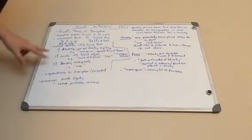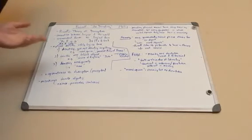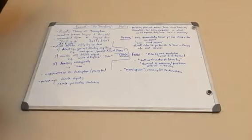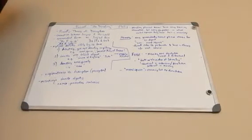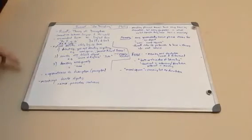The third way of denoting is denoting ambiguously — thus, 'man.' The word 'man' is a lot of things. It can pick out me, it can pick out Winston Churchill, it can pick out many different things — thus it denotes ambiguously.